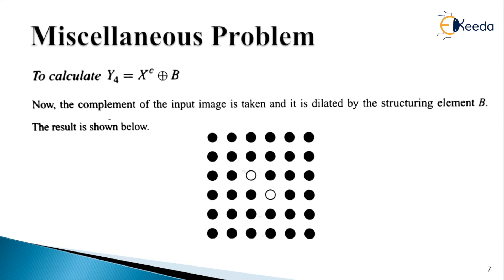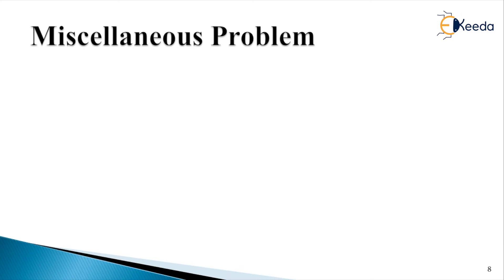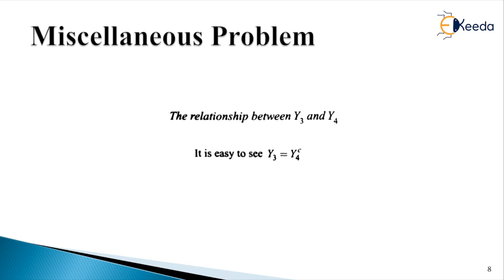In the last part, part six, we were asked to find the relationship between Y3 and Y4. Carefully observing the outputs Y3 and Y4, whatever pixels were white in Y3 are black in Y4, and the same reversal is true in the other direction. Therefore, the relationship is: Y3 is equal to the complement of Y4, or equivalently Y4 is equal to the complement of Y3.